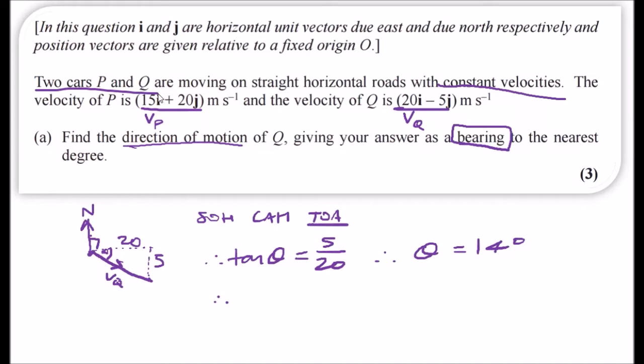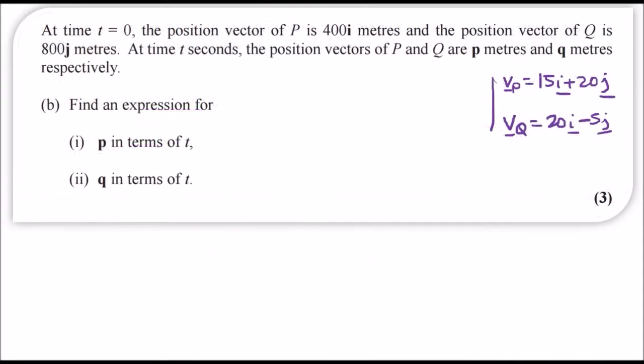As a bearing we also have to add 90 degrees, so the total angle or direction of motion equals 90 plus 14 degrees, which gives us 104. Simple, isn't it? Let's move on to the second part.